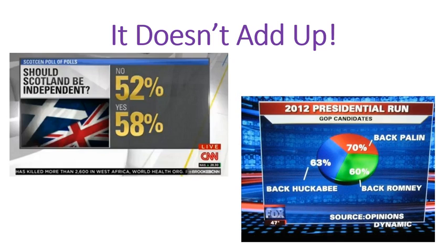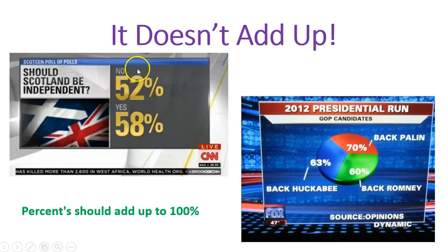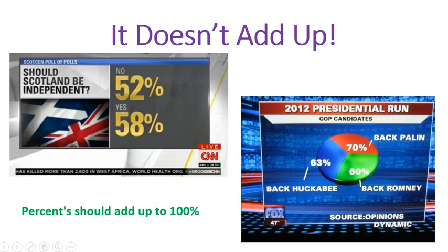Now let's look at one of my favorites. Percents should add up to 100. If they don't add up to 100, they should be pretty close. They certainly shouldn't be a yes-no vote that adds up to 110 — that just doesn't make any sense at all. This is the worst offense; there's not really a good reason why that should ever happen. Percents constantly don't add up to 100. Here's another example where you have 70, 60, and 63.